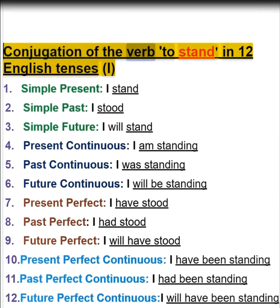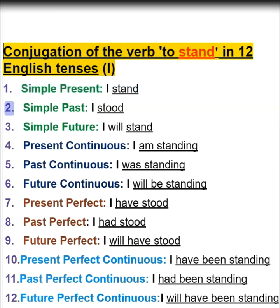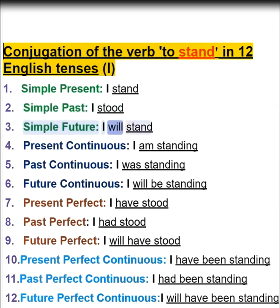Conjugation of the verb to stand in 12 English tenses. I: 1. Simple present — I stand. 2. Simple past — I stood. 3. Simple future — I will stand.